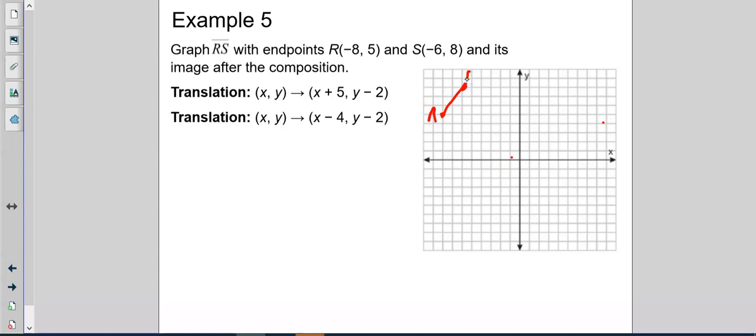Now, the first translation is add 5, subtract 2. And again, that looks like this as a vector. So I can either add 5 to the negative 8 and get negative 3. Subtract 2 from the 5 and get 3. Or I can just move it. It doesn't matter. Whatever is best for you. So I'm going to go 1, 2, 3, 4, 5. Down 2. And what point is that? Negative 1, 2, 3, positive 3.